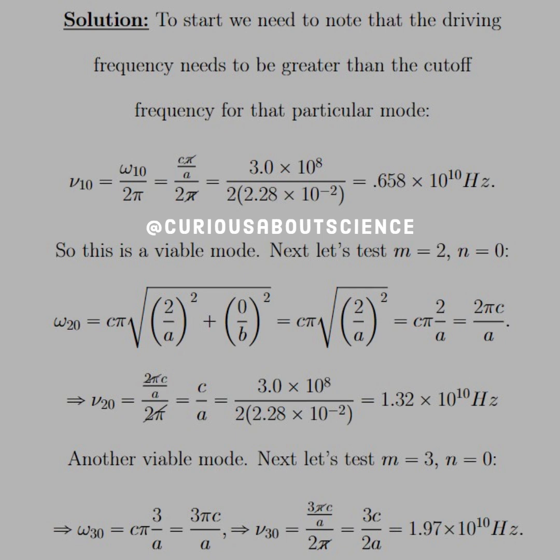ν₁₀ equals ω₁₀ over 2π. Plugging in everything we need for ω₁₀ from the square root, we see that we get cπ over a, since m is 1 and n equals 0. That cancels with the π from the 2π. Then we plug in our values: c equals the speed of light, and a is the dimension, 2.28 times 10⁻² meters. That equals 0.658 times 10¹⁰ Hz. Notice that our driving frequency is at 1.07, so we're good to go.